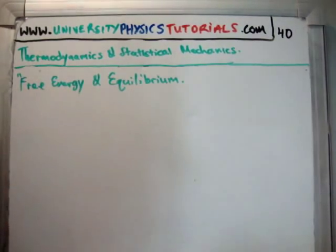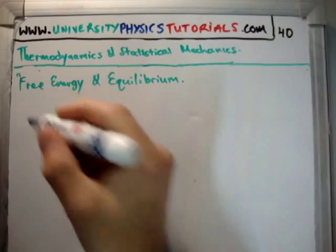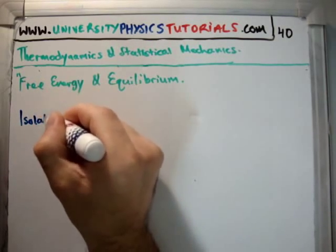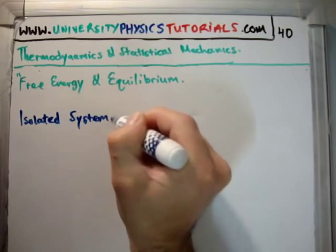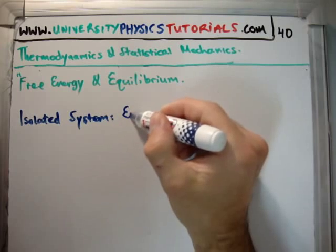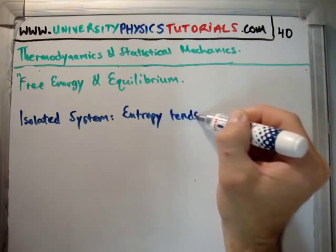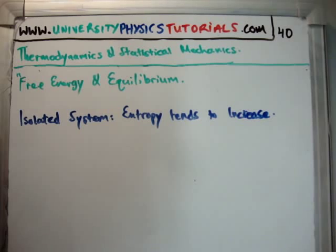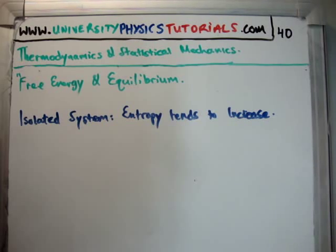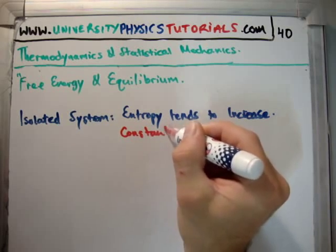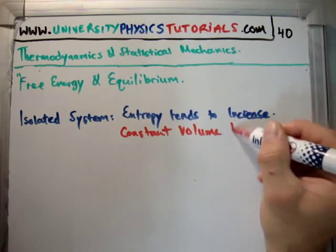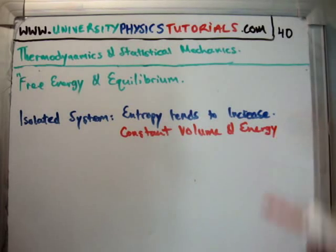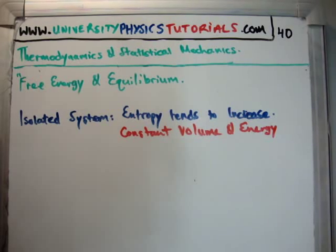We already have kind of an answer to this, because we know what the second law says. The second law says that for an isolated system, the entropy tends to increase. Now, there's something which I glossed over when I was talking about the second law — the conditions under which the second law applies. And the conditions are constant volume and constant energy. If you're in an isolated system with constant volume and energy, the entropy will tend to increase.